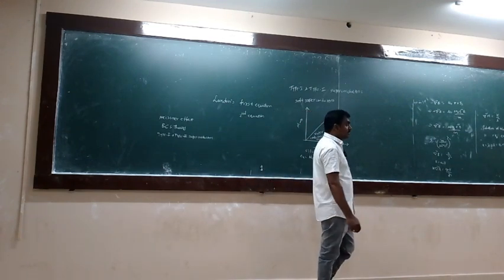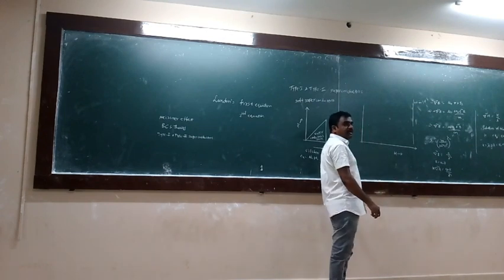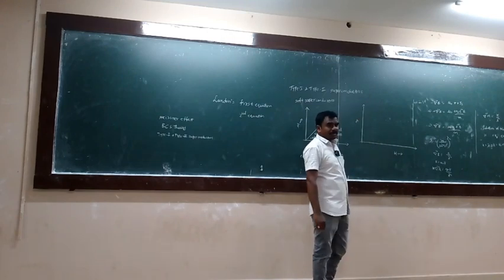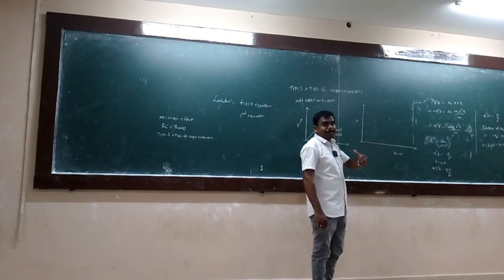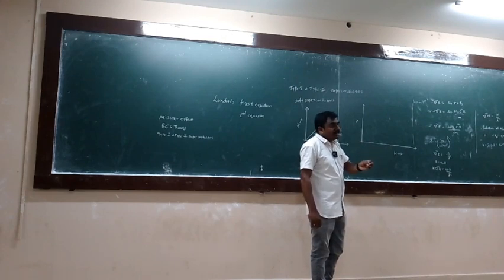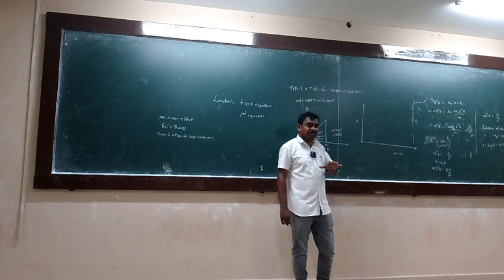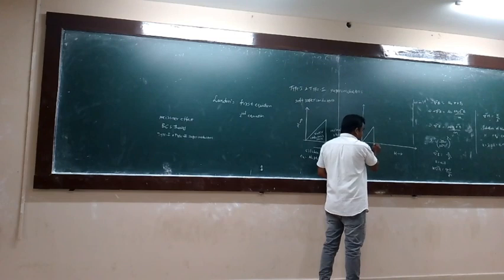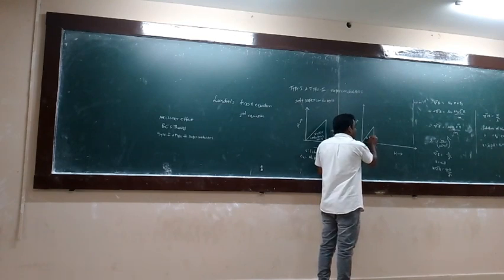For Type 2 superconductors, when you apply a magnetic field, magnetization takes place inside the material. Initially, the material does not allow the magnetic field — the magnetic lines of force are expelled through the specimen up to a certain level. At a certain level called HC1, the material begins to change. Below HC1, the total material is in the superconducting state. HC1 is called the lower critical magnetic field.